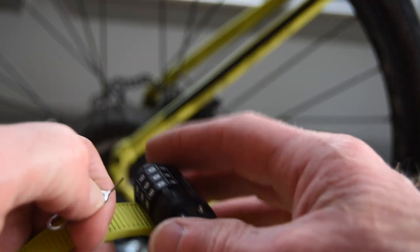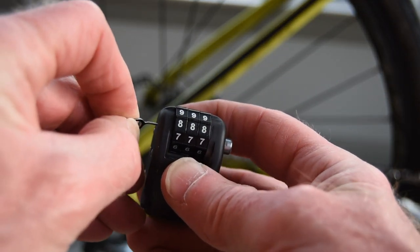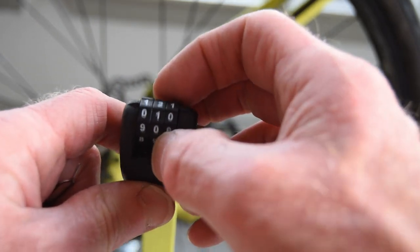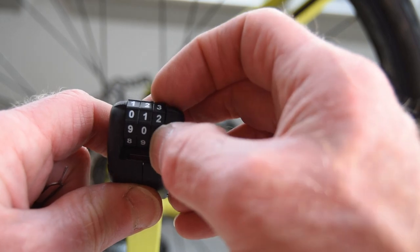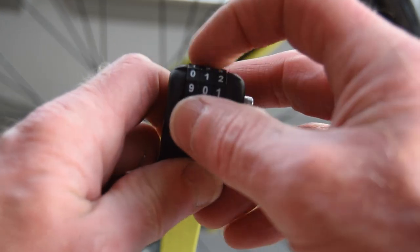Okay, to reset your combination, just take a paper clip or something and press in on the side till it clicks and set your new combination. Set it to one two three and press the button on the side. Now it's set.